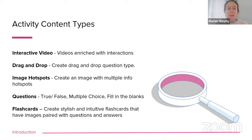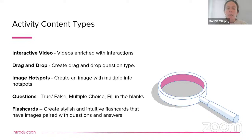Some of the activity content types: you have an interactive video, which I'll show you at the end — this is where you can upload a video and add interactions to it. You have the drag and drop question type, where students can drag text into a drop zone to demonstrate their learning. You have the image hotspot, where you create or upload an image and add multiple information hotspots to it. You have multiple question types: true and false, multiple choice, fill in the blanks. And you've got flashcards where you can create flashcards that have images paired with questions and answers.